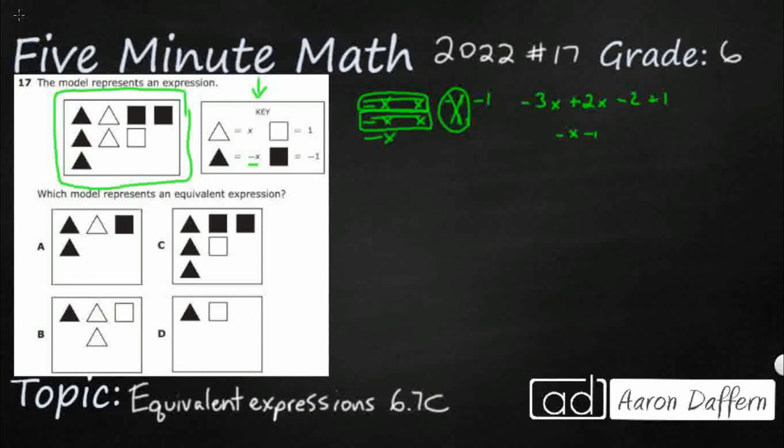Because if I have negative three x and then I add two x, that's going to leave me with negative x. If I've got minus two and I add one, that's going to leave me with minus one. So there we go, negative x minus one. That's what that equals as an expression.